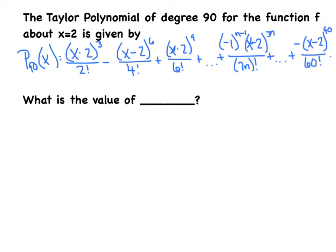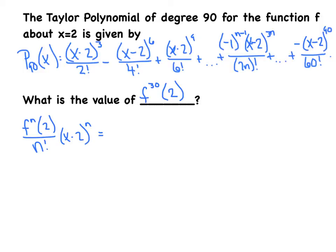Take your time, copy this down carefully. My question: what is the value of the 30th derivative evaluated at 2? Here's how I set it up. What would Taylor do? Generically, it's always the nth derivative evaluated at 2, divided by n factorial, times quantity x minus 2 to the nth. Specifically, I want the 30th: 30th derivative evaluated at 2, divided by 30 factorial, times x minus 2 to the 30th power. All three 30s should correspond and match perfectly. Now I set that equal to the general term: negative 1 to the n minus 1, times x minus 2 to the 3n, divided by the quantity 2n factorial.